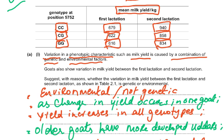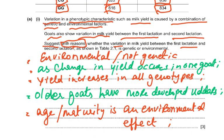Goats also show variation in milk yield between the first and second lactation. The question asks: 'Suggest with reasons whether the variation in milk yield between the first lactation and the second lactation is genetic or environmental.' This was a difficult 'suggest' question. The key issue is: why is it environmental and not genetic?